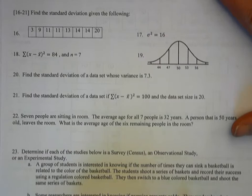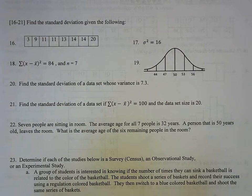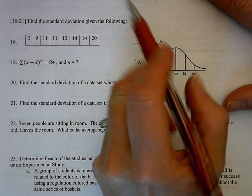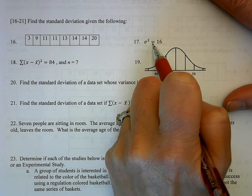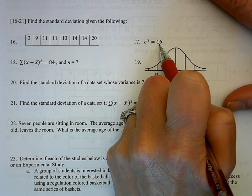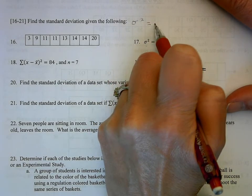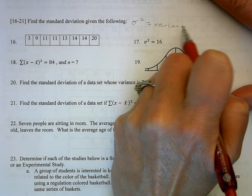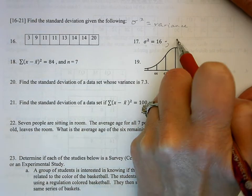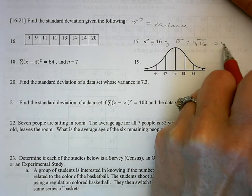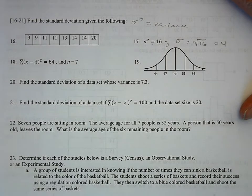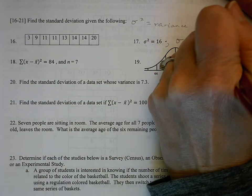Question 17 is just making sure you know how to work with variance and standard deviation using notation. Here they tell you that the variance equals 16 — that symbol means variance. So for the standard deviation, you just square root that: the square root of 16 is 4, and that would be your standard deviation.